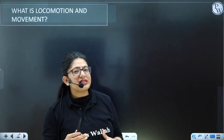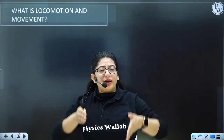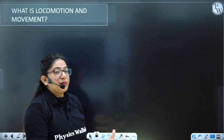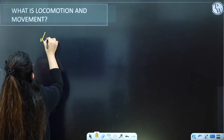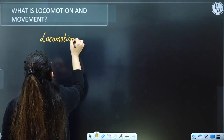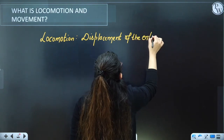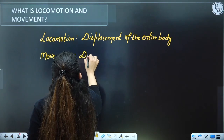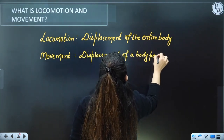As the name is locomotion and movement, let's see what is locomotion and what is movement. Movement is the displacement of a body part — for example, moving your arm or hands while remaining at one place. But if you start walking from one place to another, displacement of the entire body takes place. That is locomotion. So locomotion means displacement of the entire body, while movement means displacement of a body part only.